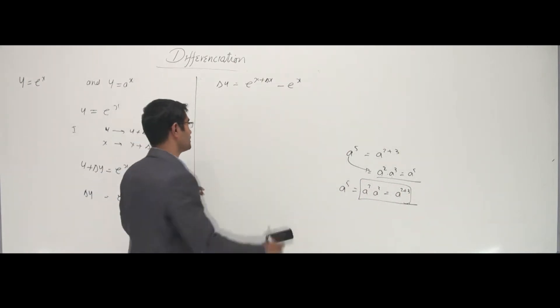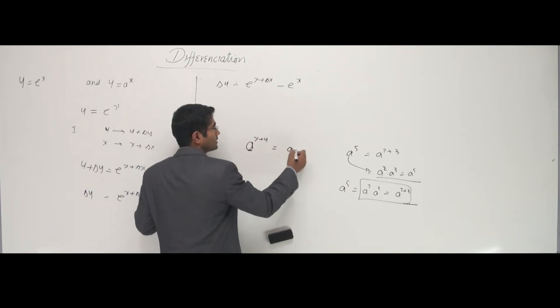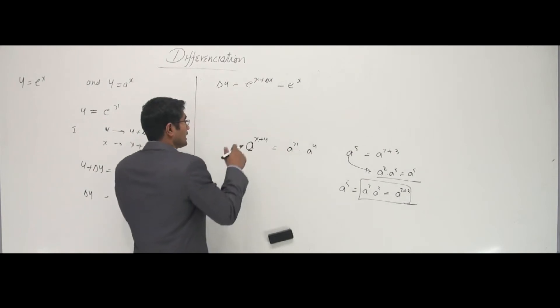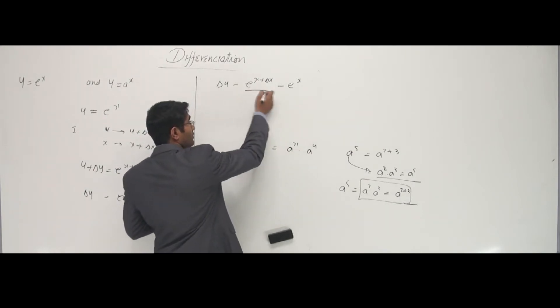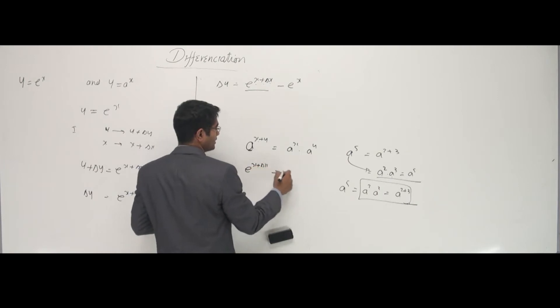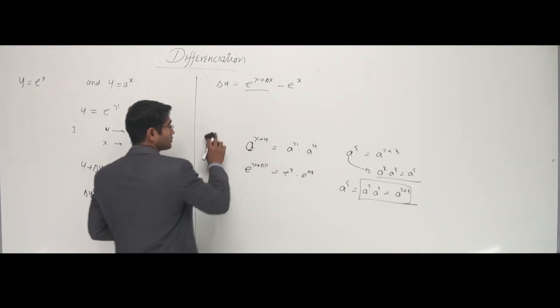What I understand from here is, if I have any number to the power like x plus y, I can write this guy twice, a and a twice, and x goes here and y goes here. The power is equal to that. Can I use this here? Look at this. I have e power x plus delta x. Can I write e power x plus delta x as e power x into e power delta x? Yes.